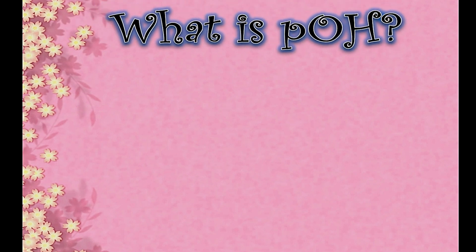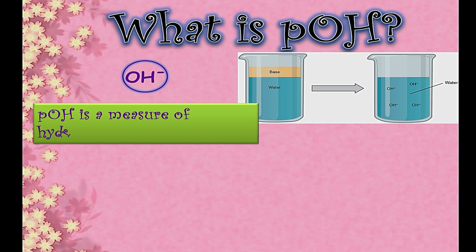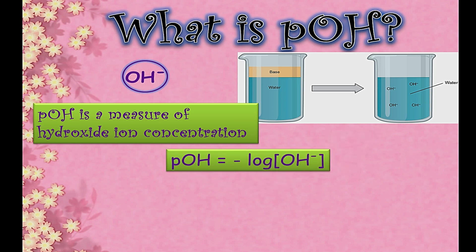What is pOH? pOH is the potential of the hydroxide ion, OH⁻. These ions are formed whenever any base or alkali is dissolved in water — it ionizes and produces hydroxide ions according to Arrhenius theory. So pOH is a measure of hydroxide ion concentration in any solution.